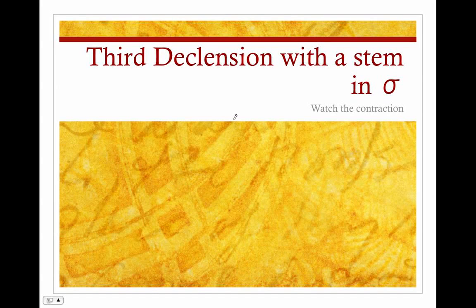Here's another lesson on third declension nouns. This time the stems are going to end in sigma. The trick with these is you're not actually going to see this sigma in anything except the nominative singular, because the sigma is going to drop out in every single case.